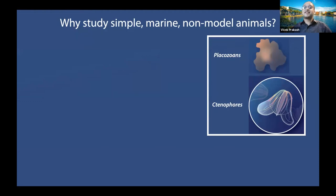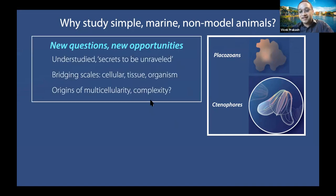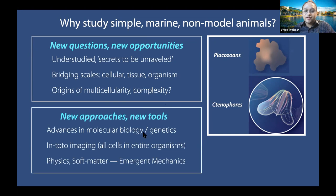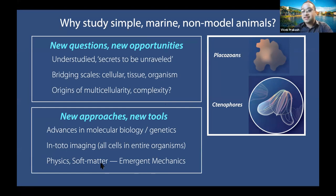The important question: why should we study these simple marine non-model animals? There are several reasons. There are new questions to ask, and these are very understudied — many secrets waiting to be unraveled. You have the ability to bridge scales: in these simple animals you can go all the way from cells to tissues to entire organisms. You can ask questions on the origins of multicellularity and origins of complexity. And this is a great time because there are new tools, advances in molecular biology and genetics, genomes have been sequenced, we can carry out in-toto imaging of all cells in entire organisms, and there's fantastic interest from the physics and soft matter communities to study emergent mechanics in these animals.